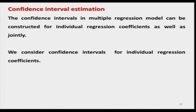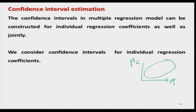After the test of hypothesis, let us move to confidence interval estimation. The concept was already explained for simple linear regression, so I will not spend much time on it — the same methodology applies here. We consider the confidence interval for individual regression coefficients. For completeness, note that simultaneous confidence intervals can also be constructed for more than one coefficient — they take the form of an ellipse for two parameters or an ellipsoid for three — but here we focus on individual intervals.